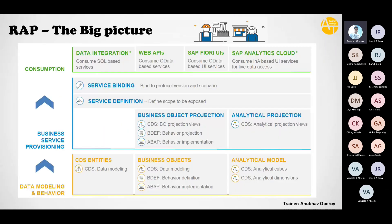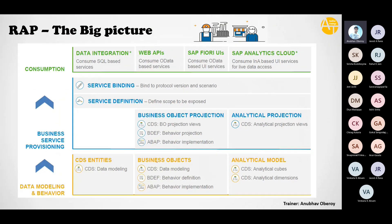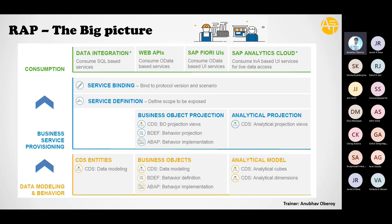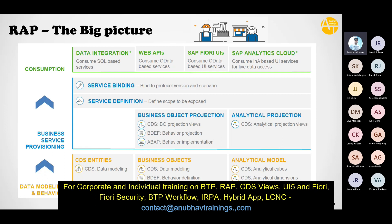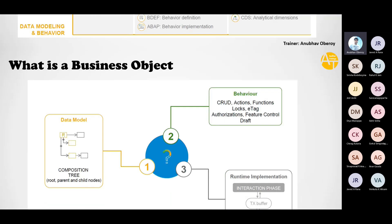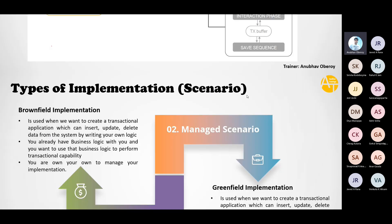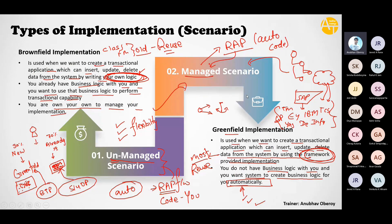Three important slides to remember. First: the approach — we start with a CDS entity, create a business object, define behavior definition, behavior implementation, behavior projection, BO projection, service definition, service binding, and Fiori app. That is our flow of development we will use in training. Second: what is a business object, what is the life cycle of a business object, and what behaviors a business object possesses. Third: managed versus unmanaged. If these three questions are clear, anybody can develop using RAP and it's not difficult.